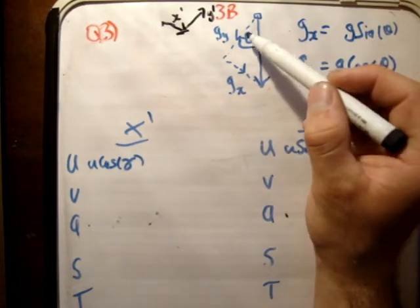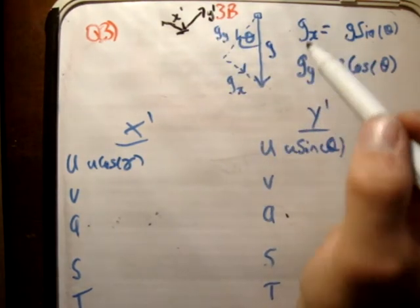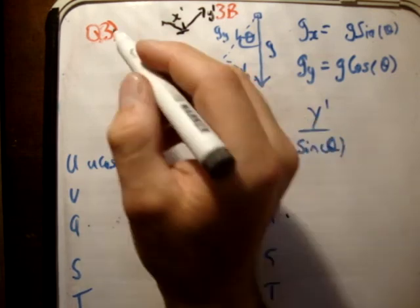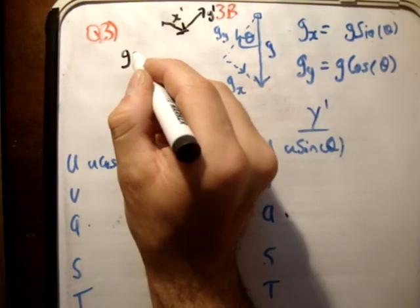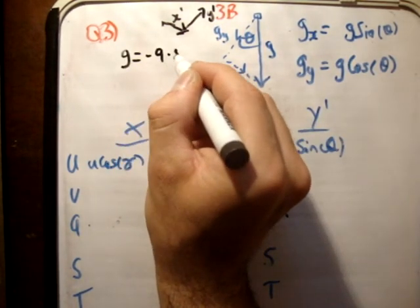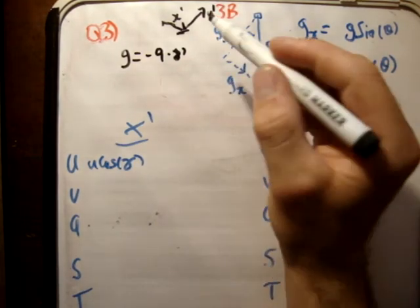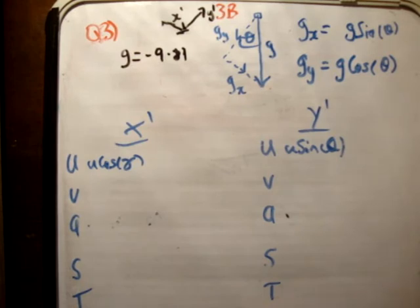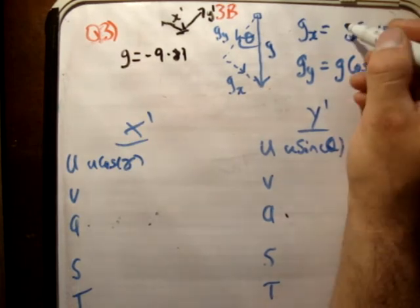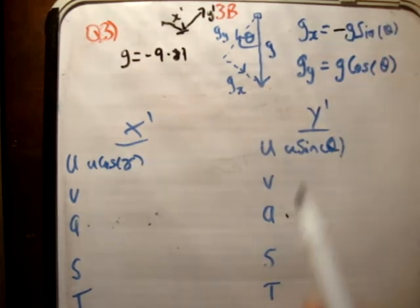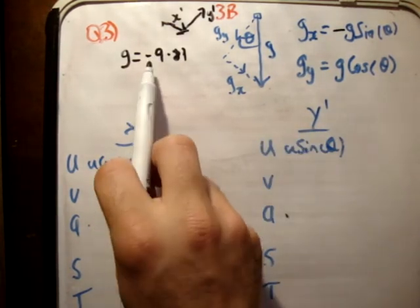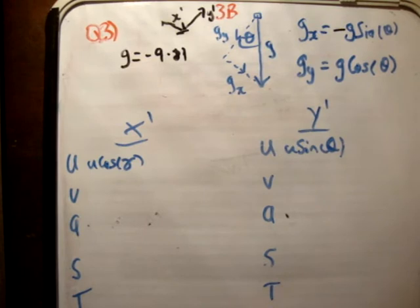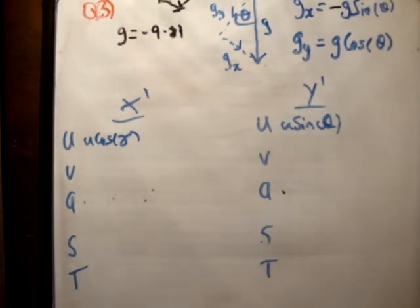However, g sub y is in the negative y-prime direction. So it's going to decelerate it. But we know that we're going to call g equal to minus 9.81. So what we want is that when we plug this in, it will give us a negative for g sub y and a positive for g sub x. And how we do that is by putting a negative here. So negative times negative gives a positive, which is an acceleration. And negative times positive gives us a deceleration.